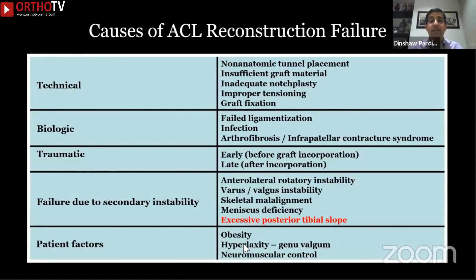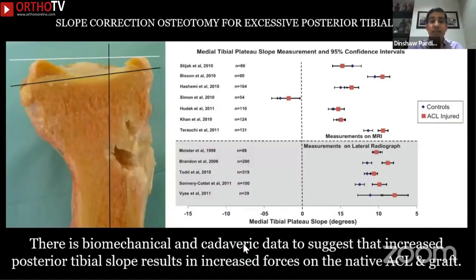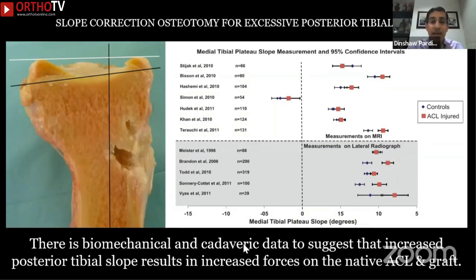Finally, excessive posterior tibial slope — numerous biomechanical and cadaveric studies today suggest that an increased posterior tibial slope results in increased forces on both the native ACL and an ACL graft. I'm not suggesting that in a primary situation you routinely perform slope correction with ACL reconstruction, but if you get a patient whose ACL reconstruction has failed and you find increased tibial slope, please identify it and discuss with your patient that you probably require a slope correction, because otherwise your revision ACL is also likely to fail.